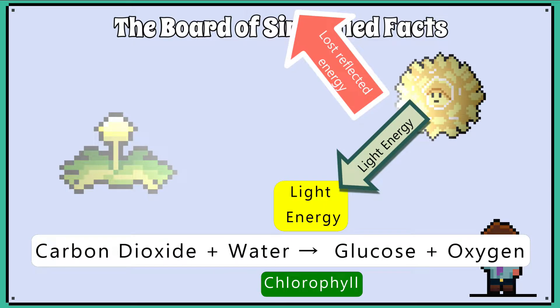The dandelion uses solar energy to photosynthesise and produce glucose. However, not all the solar energy that gets to the dandelion plant is converted into chemical energy in the form of glucose.